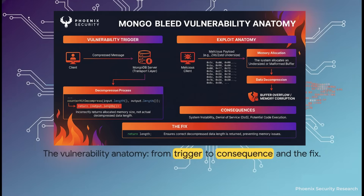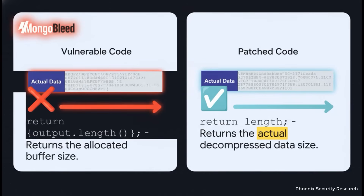This diagram really shows the whole chain of events. An attacker sends a compressed message, but during decompression there's a critical error: the code misreports how much data was actually decompressed. That mistake leads to the server reading past the end of the legitimate data and into random memory, which it then sends back to the attacker. This right here is the heart of the entire vulnerability. The broken code returns output.length — the total size of the buffer allocated for the data. The patched code returns len — the actual number of bytes written into that buffer. That single difference is everything.